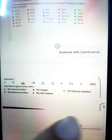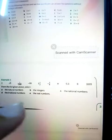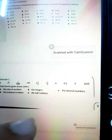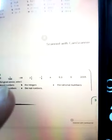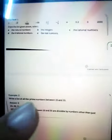Here example number one is given. In this example, the numbers are given. You have to list, you have to select the natural number, the integer, the rational number, the irrational, or the real number. Example number two: in this example you have to list all the prime numbers between 20 and 35.